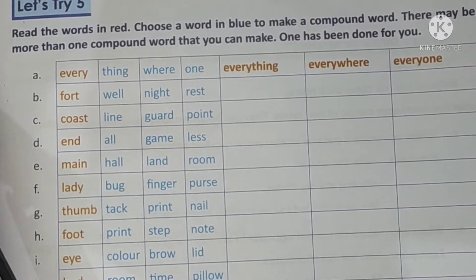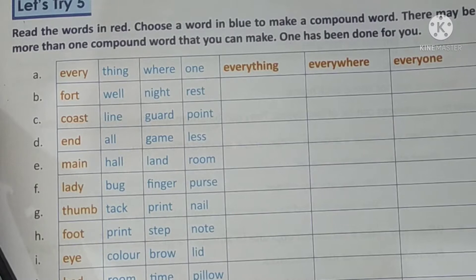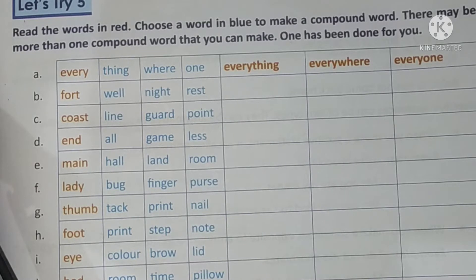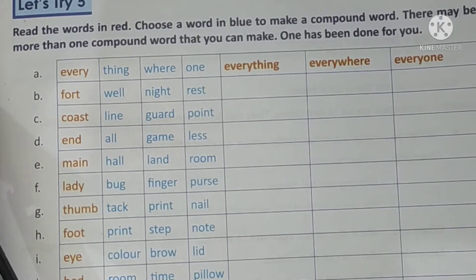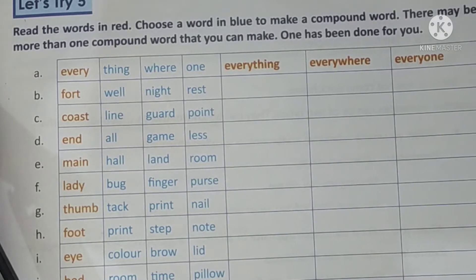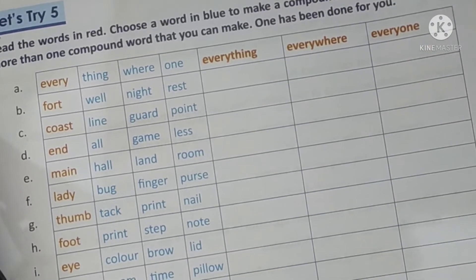Good morning students, how are you all? I hope all of you are fine. Today we are going to learn Let's Try Five of your Chapter Four. In a previous video I explained compound words — a compound word is formed when two words are joined together to make a new word. Do shabd ko jodne se jo naya shabd banta hai usse hum compound word kehte hain.